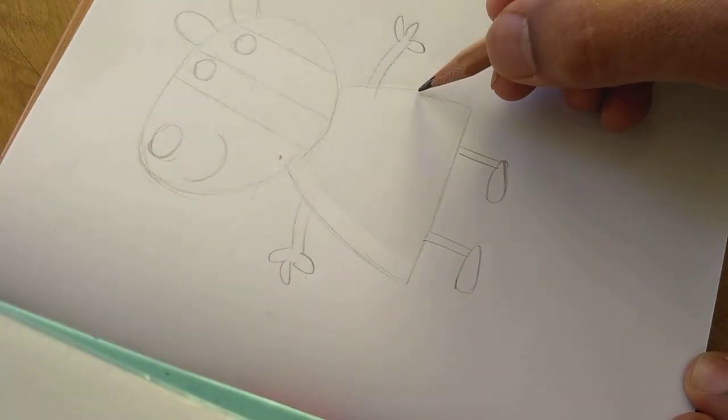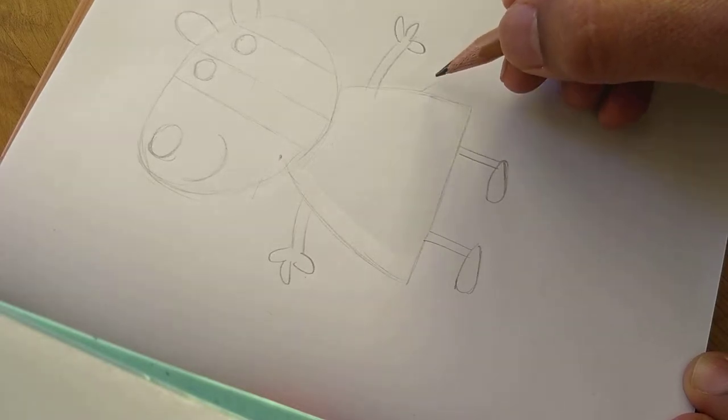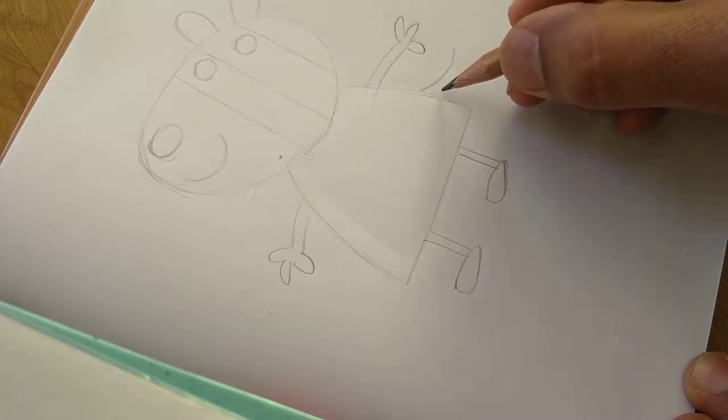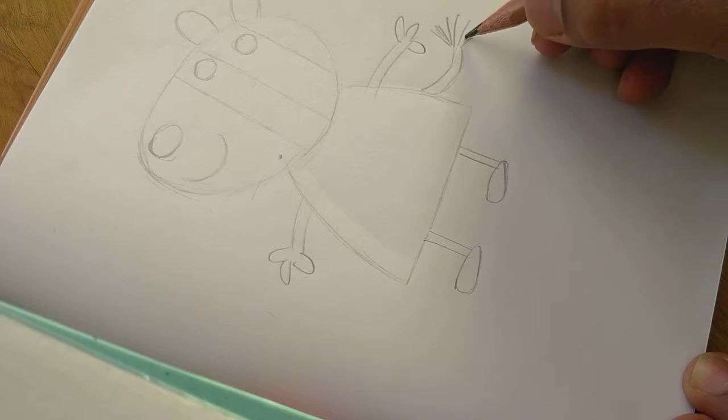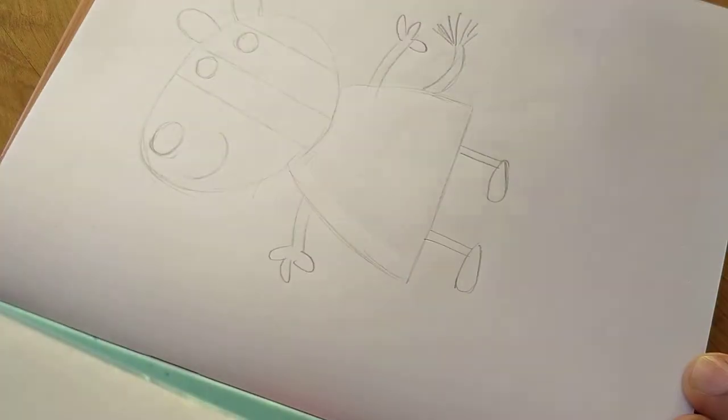In my previous videos of Peppa and Susie, the tail was very small, but here Zoe Zebra has a bigger tail. It has to be like this and should branch out in this form. Currently you can make it just like this, then we can do some sort of shading. This is an outline.